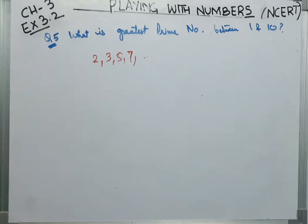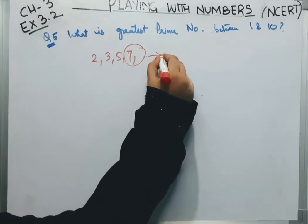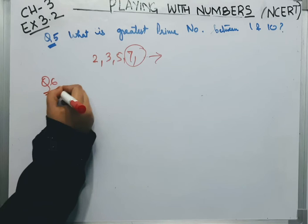These 4 are the prime numbers between 1 and 10. So, sabse bada which is the greatest number? 7 here is the greatest number. That means, 7 is the answer here. Now, 6th question is,